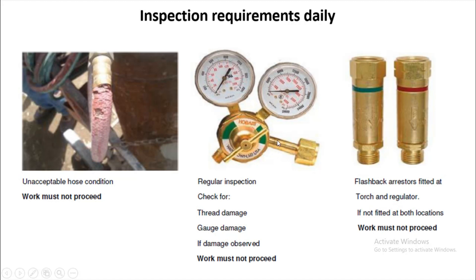During regular inspections, check the valve thread for damage and check that the gauge is working. If damage is observed, work must not proceed — coordinate with your supervisors or engineers to replace the valve. You are not permitted to repair the valve yourself as it is manufactured equipment. The flashback arrestor, installed on the torch and near the regulator, automatically locks to prevent fire from traveling back to the cylinder.